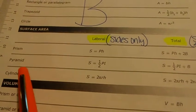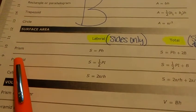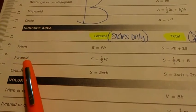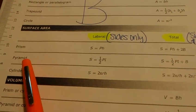In our final surface area formula, we're going to focus on the pyramid. Remember, our pyramids have one base and they come to a point.